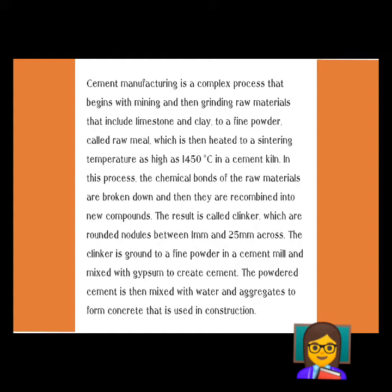The cement manufacturing process is a complex one. It starts from mining, then grinding the raw materials — including limestone and clay — which are crushed to form a fine powder known as raw meal. This raw meal is then heated in a sintering temperature of about 1450 degrees Celsius in a cement kiln, forming clinkers. Clinkers are chemical bonds of raw materials that are broken down and recombined into new compounds.